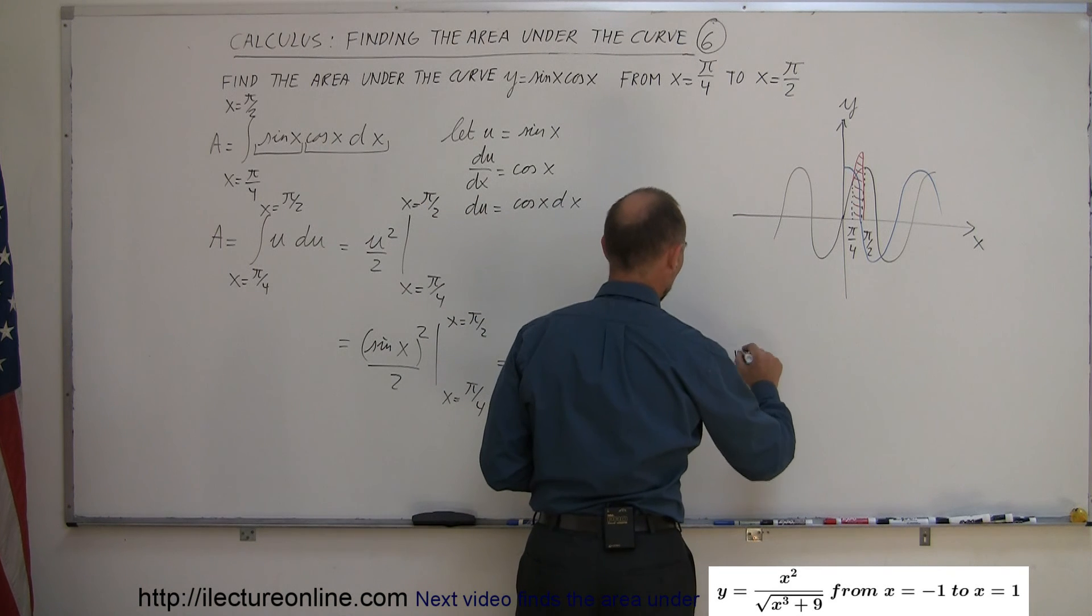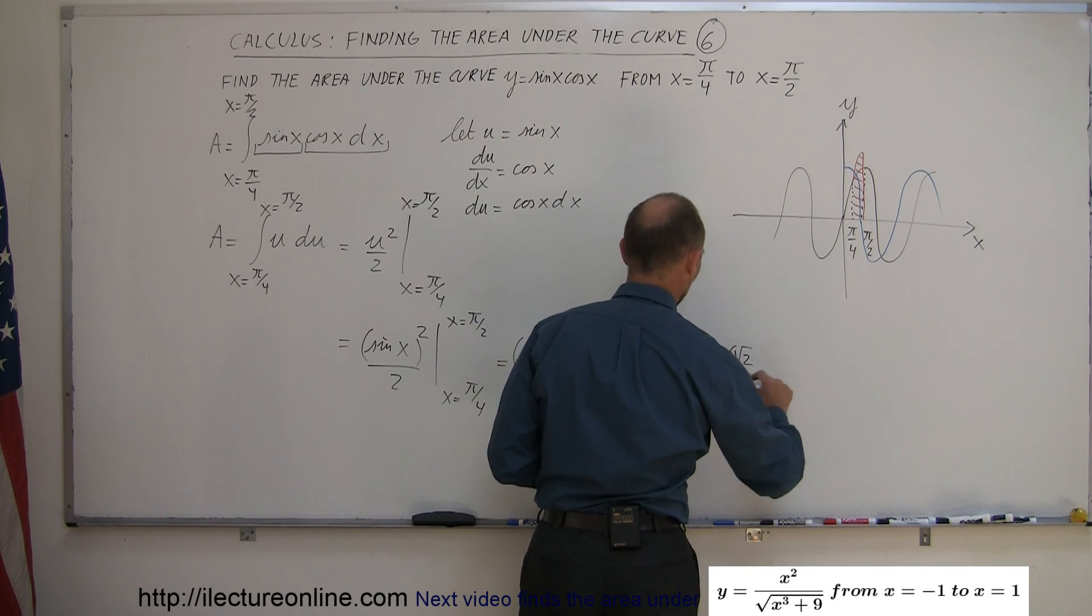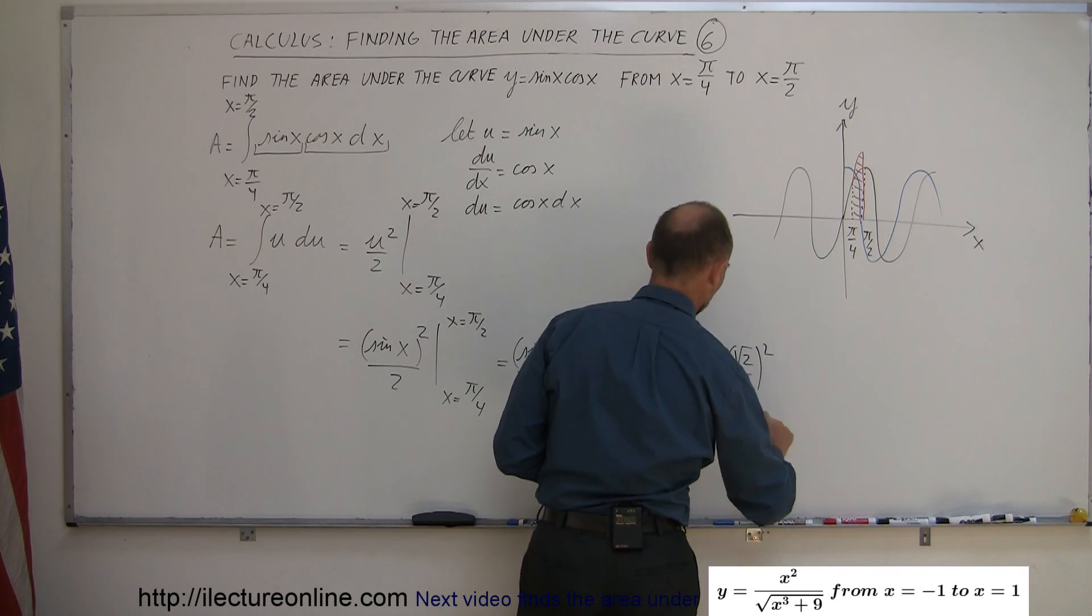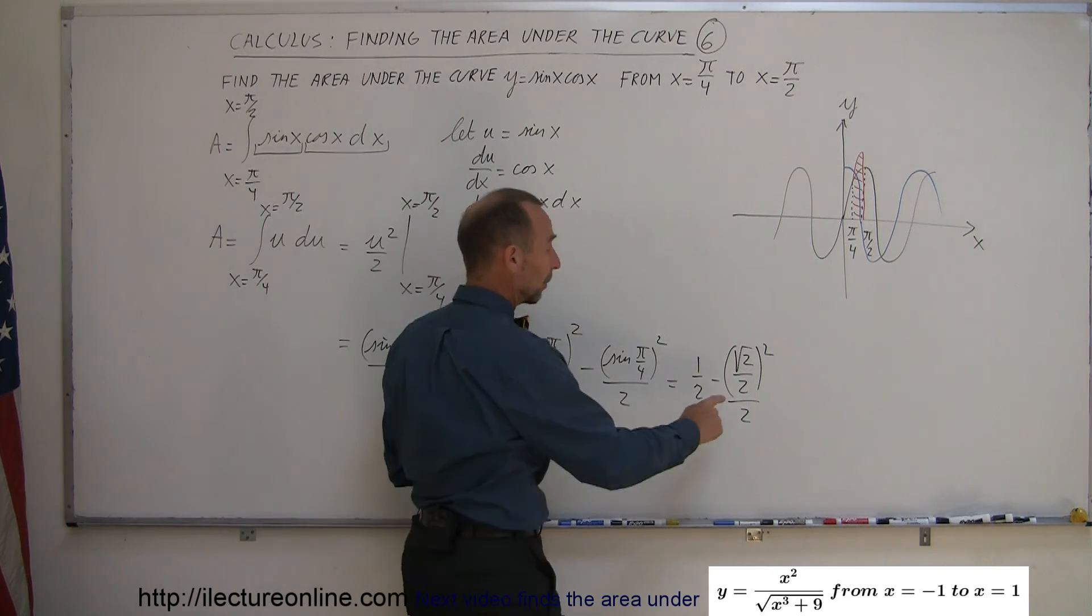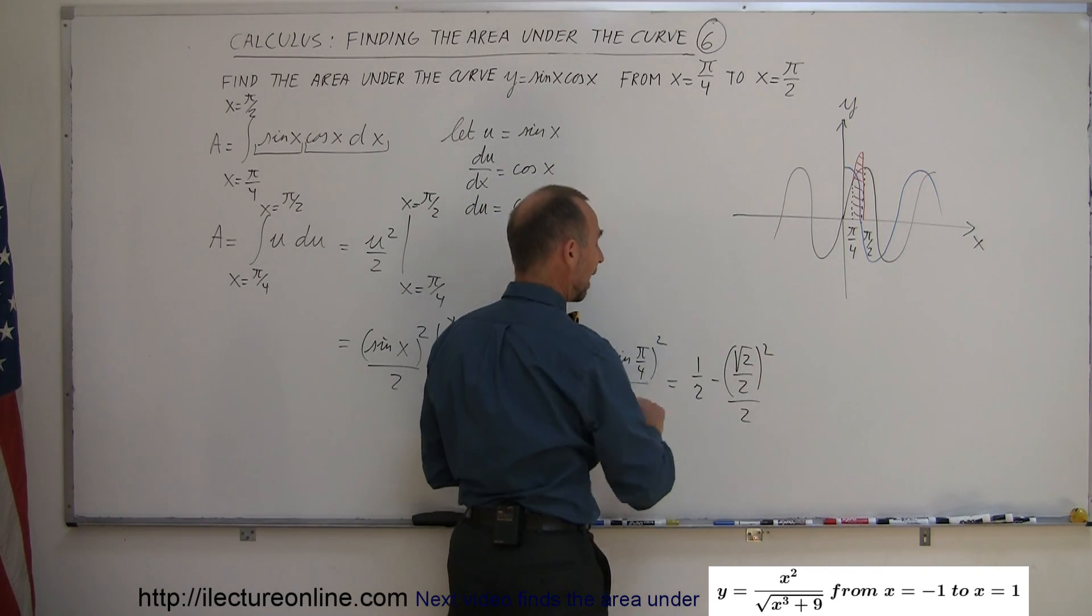So, let's write that down. The square root of 2 over 2, quantity squared, divided by 2. Now, the square root of 2 over 2 squared, that becomes 2, this becomes 4, which is 1 half. So, this is equal to 1 half minus 1 half divided by 2.